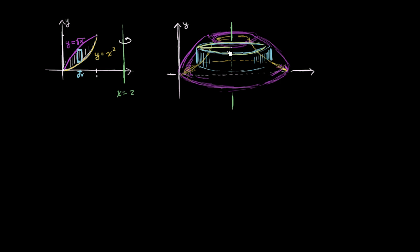Well, it's the horizontal distance between x equals 2 and whatever the x value is right over here. So it's going to be 2 minus our x value. So this radius, this distance right over here, is going to be 2 minus x. And so the circumference is going to be that times 2 pi. 2 pi r gives us the circumference of that circle. So 2 pi times 2 minus x.